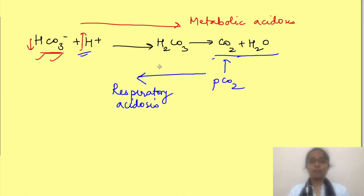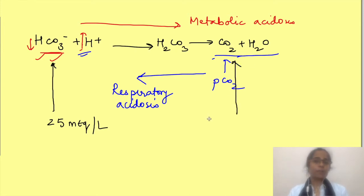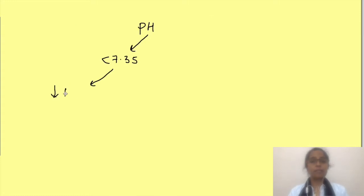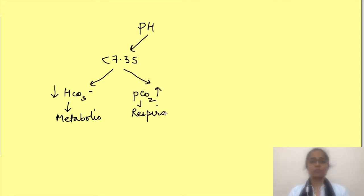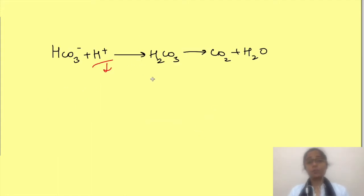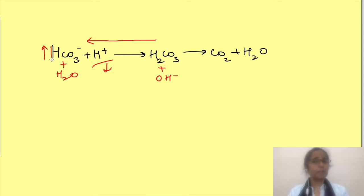The normal value of bicarbonate is approximately 25 mEq/L while that of partial pressure of carbon dioxide is 40 mmHg. So after pH, we look at bicarbonate concentration and pCO2. In acidosis, if bicarbonate is less we call it metabolic acidosis, and if pCO2 is more we call it respiratory acidosis.